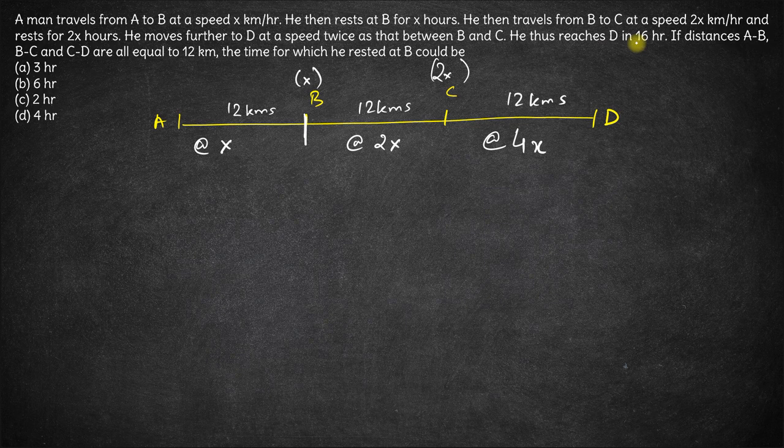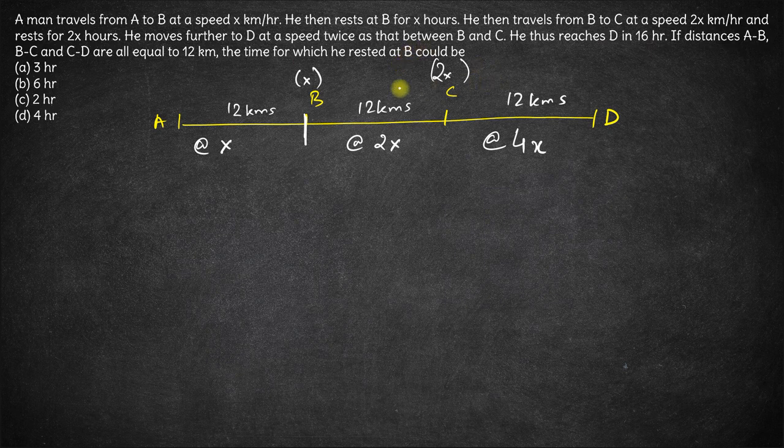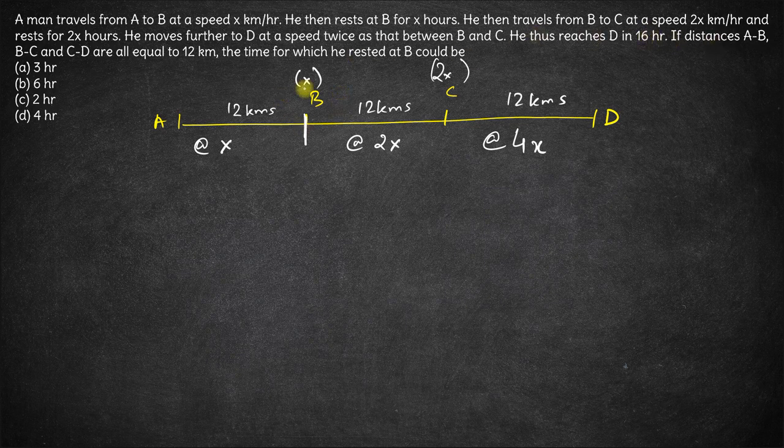And thus he reaches D in 16 hours. If the distances between A, B, C, C, D are all 12, then the time he rested at B is what? Okay, we have to calculate the value of x. The question is pretty simple. The total time is given to us as 16 hours.